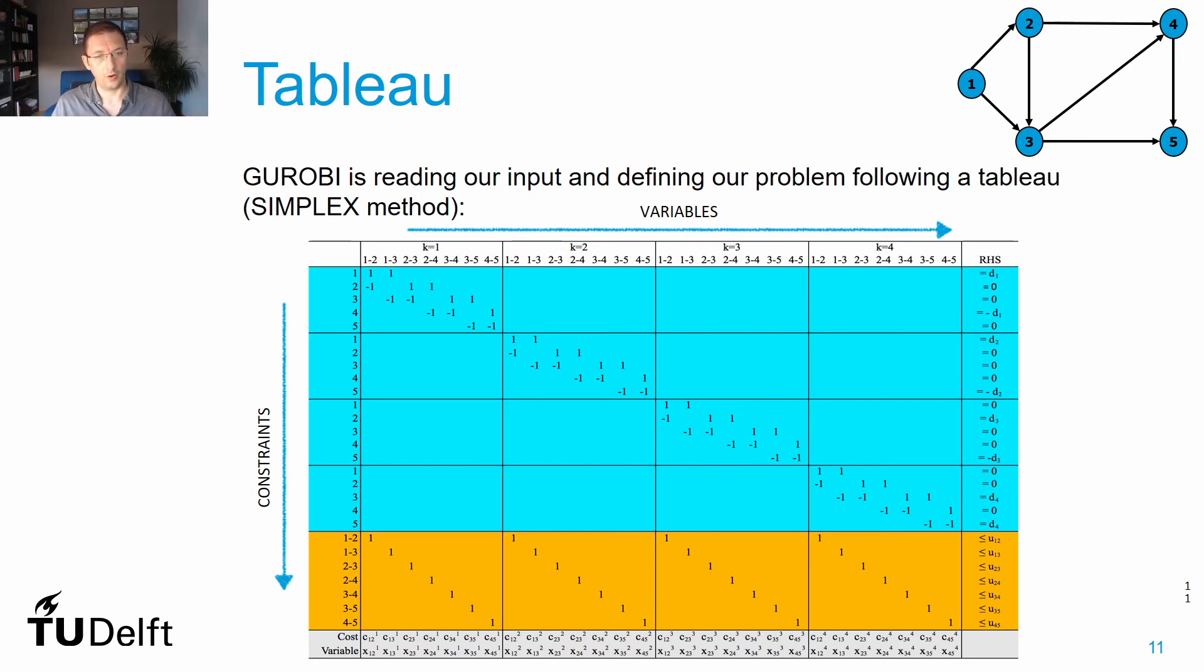What we see here, for instance, the first line is for commodity one. You see that arc 1-2 and 1-3 are leaving node one, and the right-hand side—that column on the extreme right-hand side—you do have, and this needs to be equal to the demand being generated in node one from commodity one.